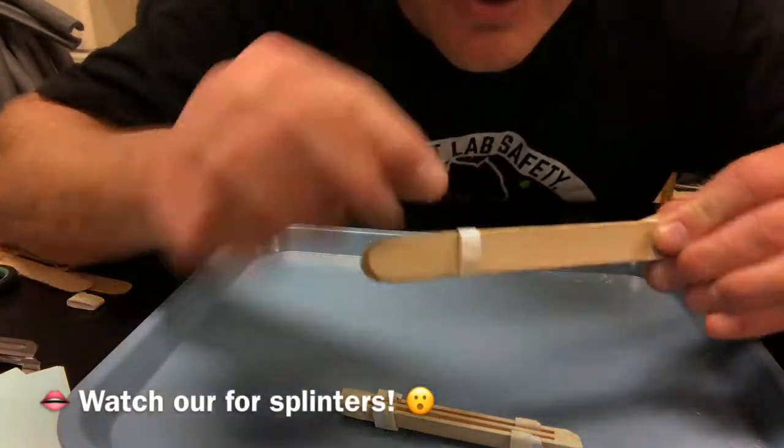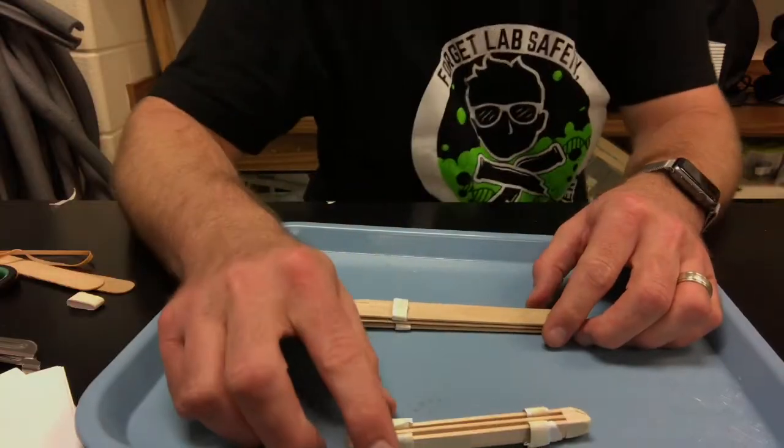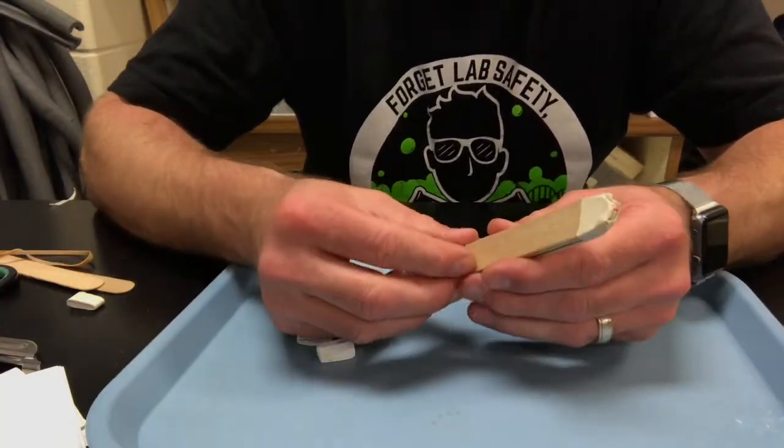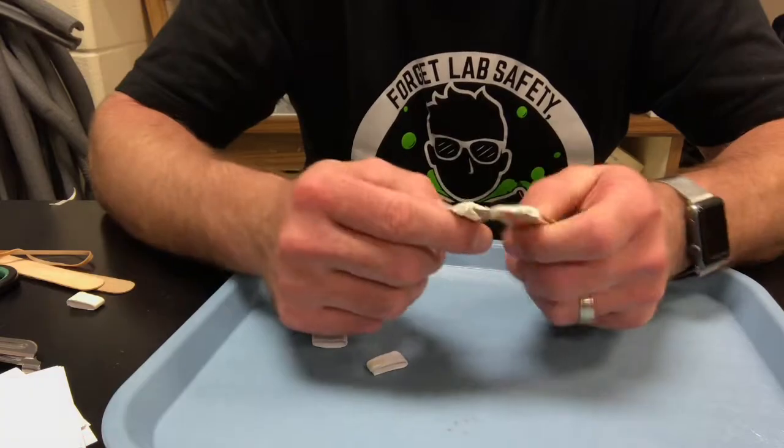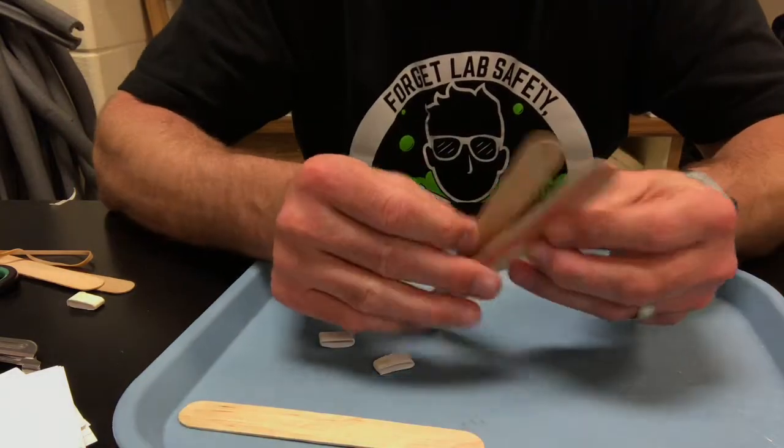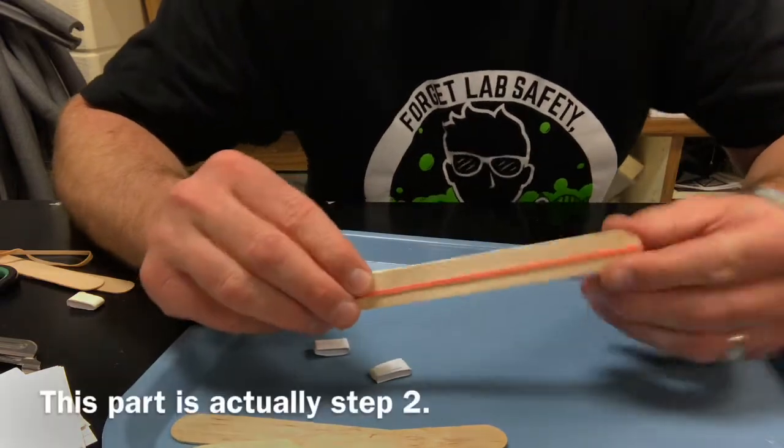Watch out for splinters. All right folks, two ways to do this. I'm gonna start with my favorite new way, which is with these big popsicle sticks. They will work with regular ones too. All you're gonna do is take your rubber band.